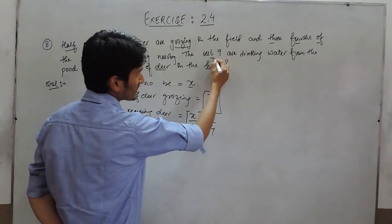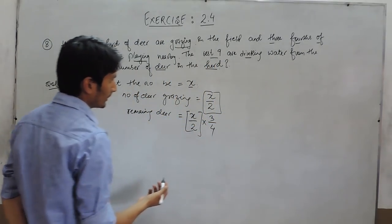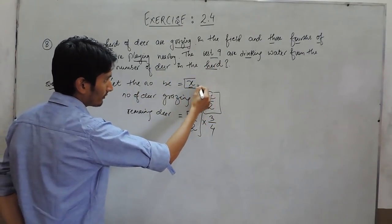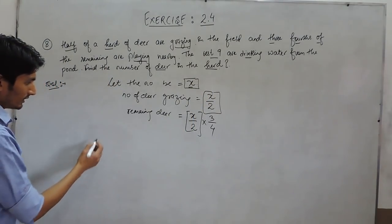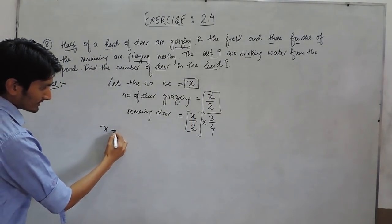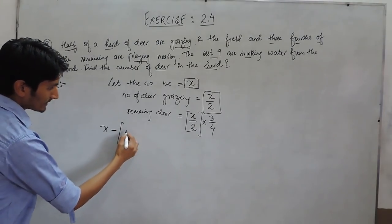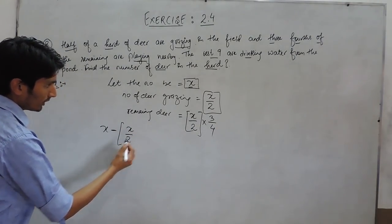And the rest 9 are drinking water. We know that the total number of deer is x. So if the total number is x and out of x, x/2 are grazing...